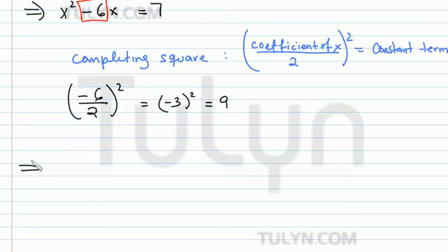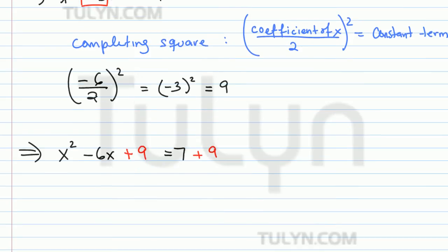So now to complete the square on the left, we want to add a 9. But remember, this is an equation, so what we do to one side we have to do to the other side. So I'm going to add a 9 to the other side too to make everything even.